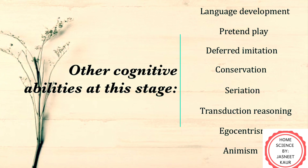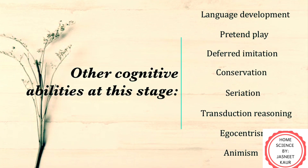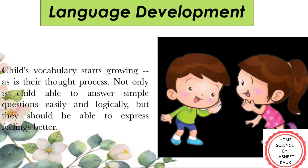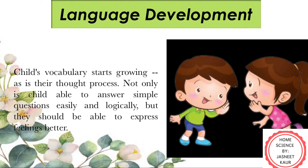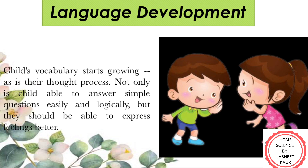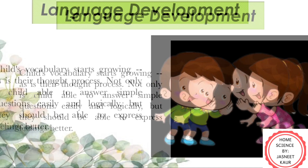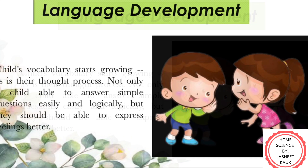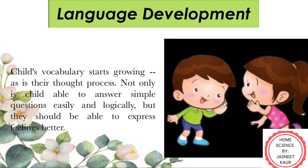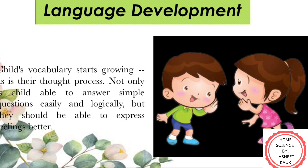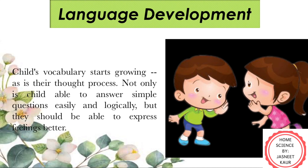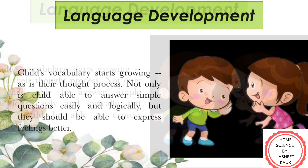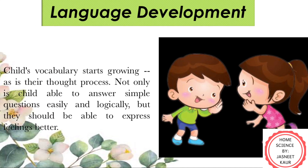Now let's discuss other cognitive abilities which occur at this stage. Starting with language development: by the age of 2 to 7 years, the language of children grows rapidly. Their vocabulary, sentence formation, and pronunciation become clearer as they grow. They start giving answers to short questions easily and logically, and they start expressing themselves pretty well — like when they are hungry or want to use the bathroom, they can communicate to their immediate caregivers easily. By the age of 4 years or more, they can easily tell stories using sentences.